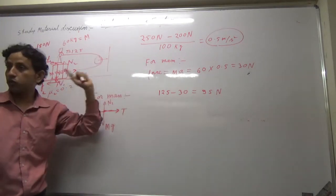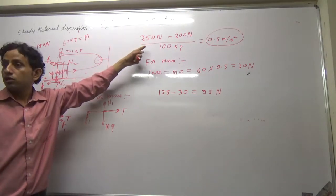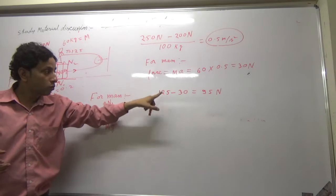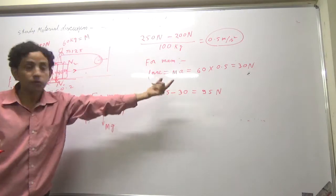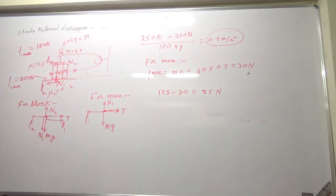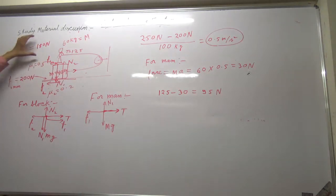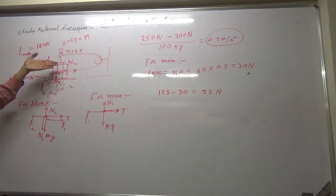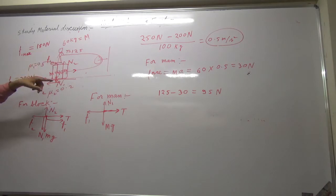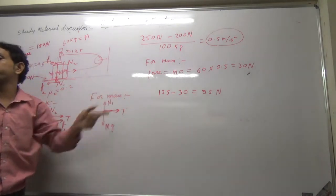For man we need 30 N force to move with this acceleration, assuming common acceleration. Now 125 force is already there. 30 N subtract, we are getting 95 N. So friction required is 95 N. But maximum possible is 180 N. So it means the man can easily stand on the block. He will not slide because required force for movement is less than maximum friction.